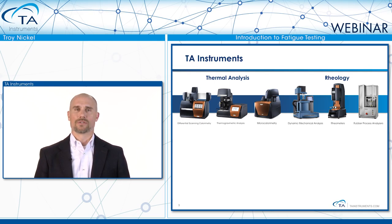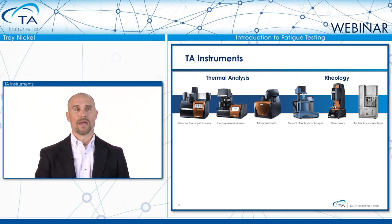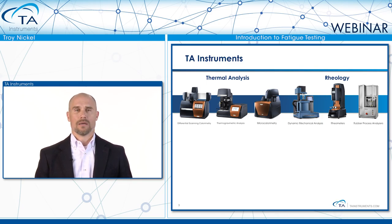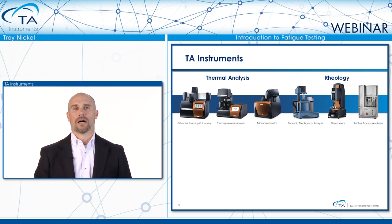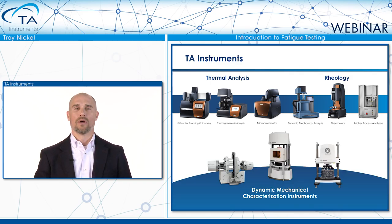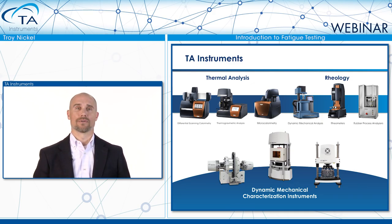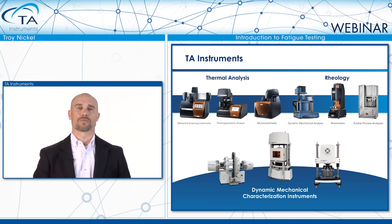TA Instruments is known for thermal analysis products as well as rheology products — DSC, TGA, and rheology. One product you might recognize is the DMA, which tests materials in the linear region where you're not really doing permanent damage. Today we'll talk about taking it to another level of force or strength to actually fail materials. This is the Electroforce product line, which we call the dynamic mechanical testing instruments, recently added to TA Instruments.